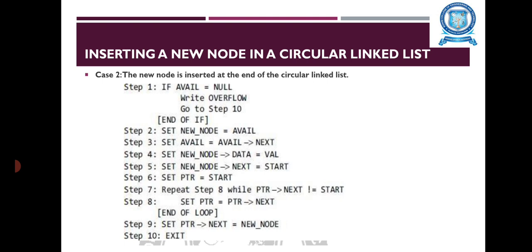In the second case, the new node is inserted at the end of the circular linked list. This is the algorithm for inserting a node at the end of the circular linked list. The steps are the same as before, but the difference in step 6 is that we take a pointer variable, initialize it with start, so the pointer now points to the first node of the linked list.